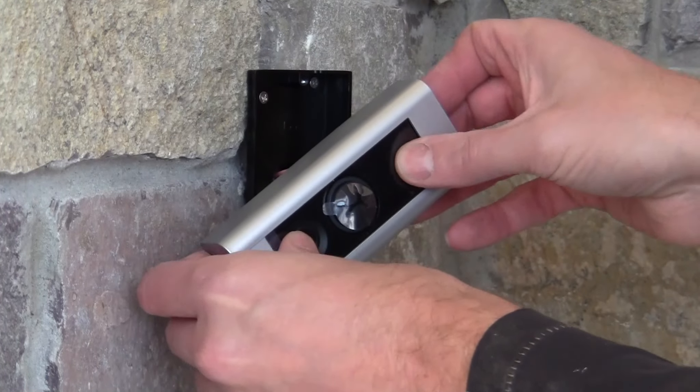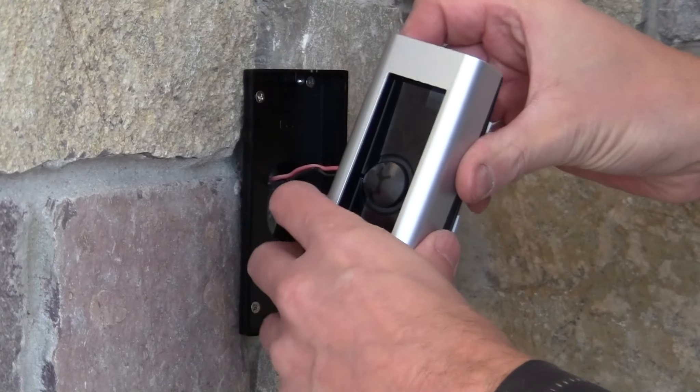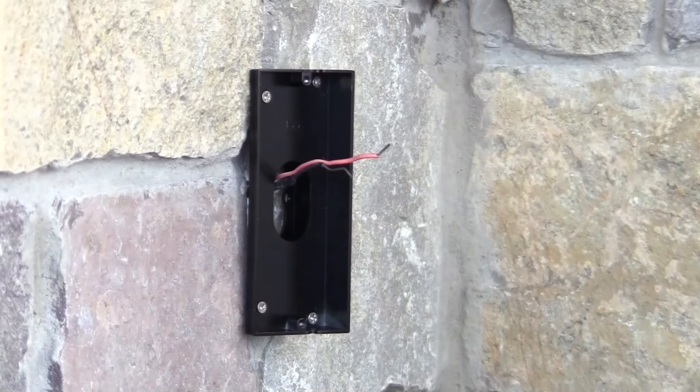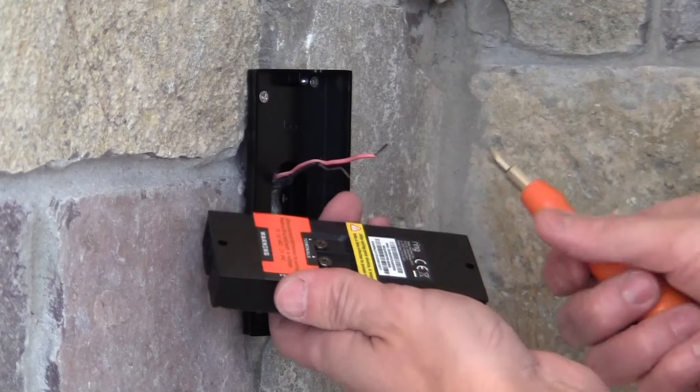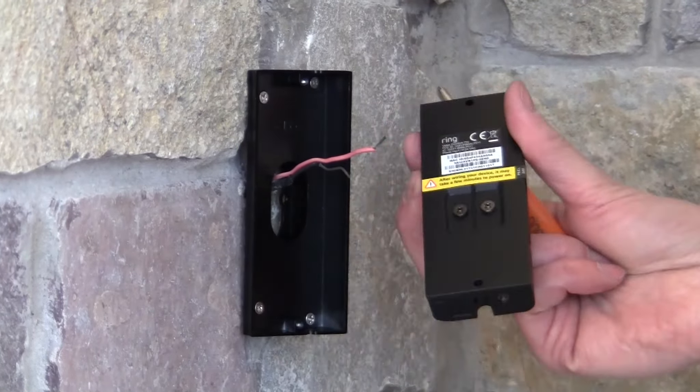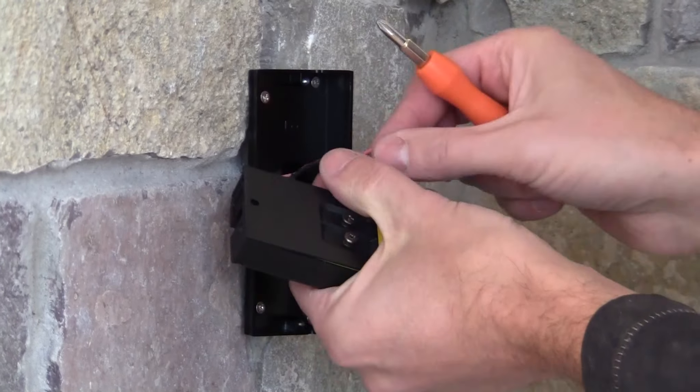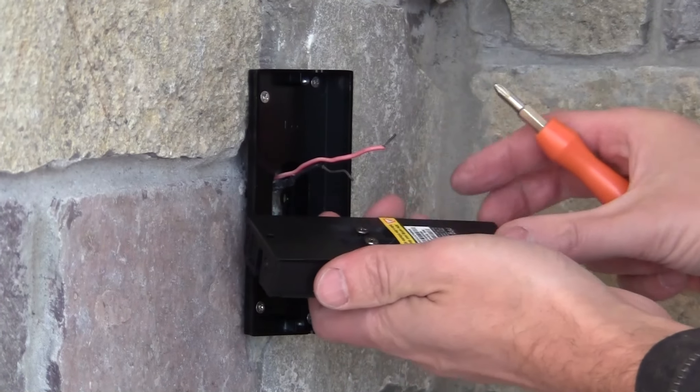So let's remove the covering from the doorbell. Pop that off. And then loosen the screws on the back. And I'm just going to tidy these wires up a little bit.